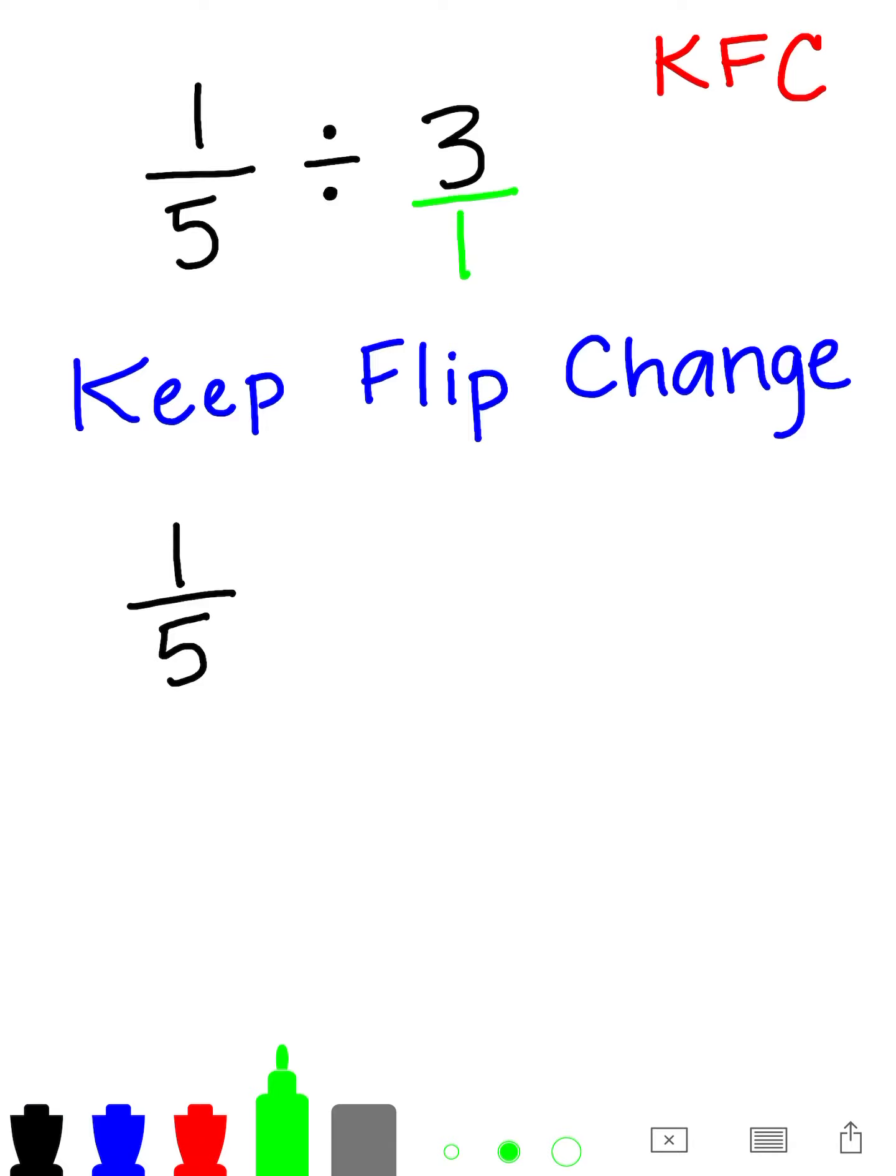And so the F for flip stands for flip it. So instead of 3 over 1, we're going to write it as 1 third. And then finally, the last step in this problem is change. And we're only going to be changing one thing. We're going to do the inverse operation of division, and we're actually going to make that multiplication.